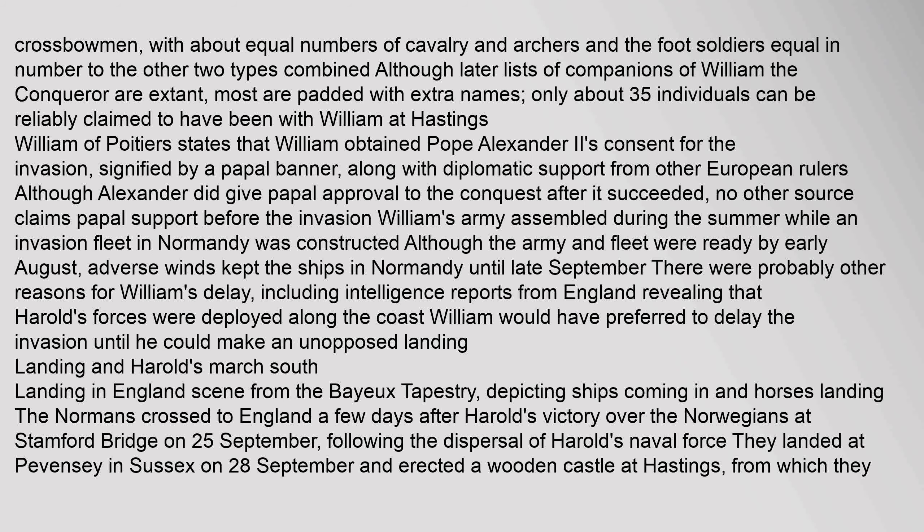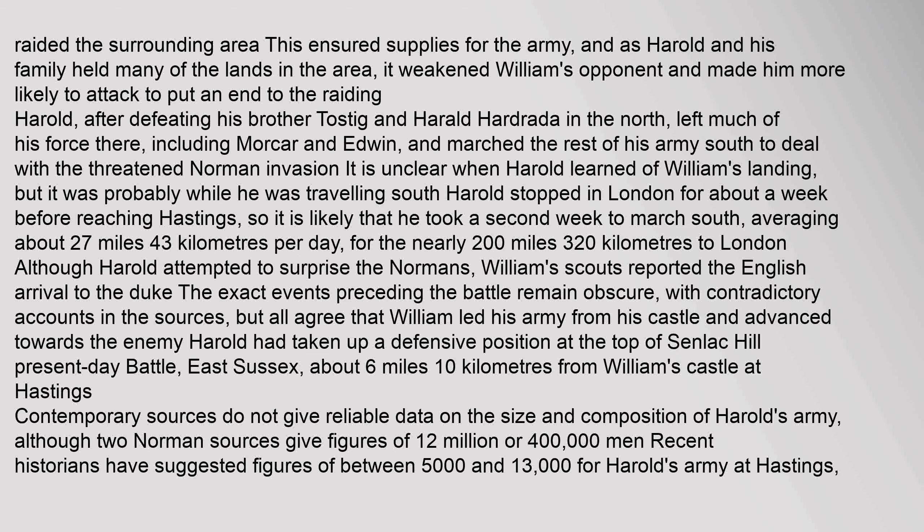Adverse winds kept the ships in Normandy until late September. There were probably other reasons for William's delay, including intelligence reports from England revealing that Harold's forces were deployed along the coast. The Normans crossed to England a few days after Harold's victory over the Norwegians at Stamford Bridge on 25 September. They landed at Pevensey in Sussex on 28 September and erected a wooden castle at Hastings, from which they raided the surrounding area. This ensured supplies for the army, and as Harold and his family held many of the lands in the area, it weakened William's opponent and made him more likely to attack.